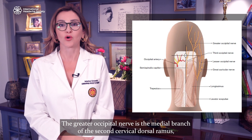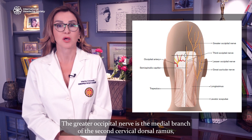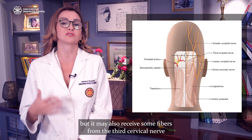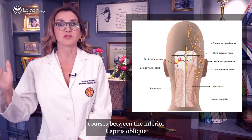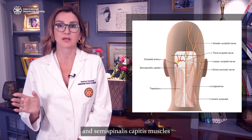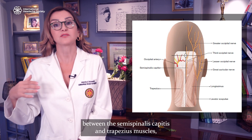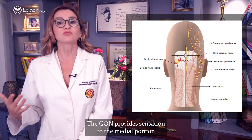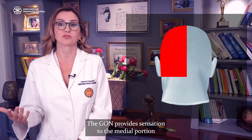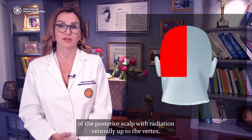The greater occipital nerve is the medial branch of the second cervical dorsal ramus, but it may also receive some fibers from the third cervical nerve. It courses between the inferior capitis oblique and semispinalis capitis muscles, entering the scalp between the semispinalis capitis and trapezius muscles. The greater occipital nerve provides sensation to the medial portion of the posterior scalp with radiation ventrally up to the vertex.